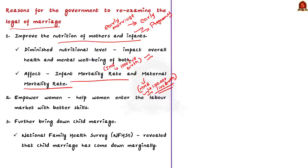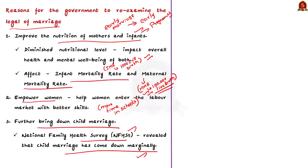The second reason for raising the legal age of marriage is to empower women. By increasing the legal age, women will spend more time in schools and colleges, helping them enter the labor market with better skills, ultimately empowering women. The third reason is that increasing the legal age will further bring down child marriage. The recently released National Family Health Survey 5 revealed that child marriage has come down marginally from 27% in the 2015–2016 period to 23% in the 2019–2020 period. By increasing the legal age, the government is trying to further bring down this child marriage menace.